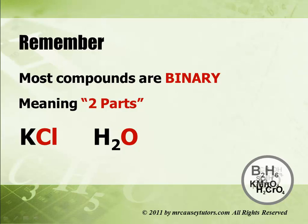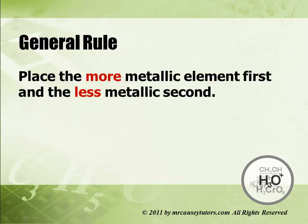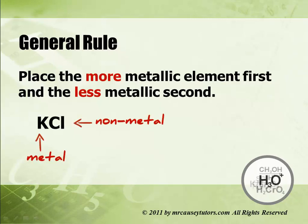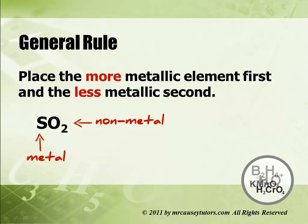KCl is potassium and chlorine; H2O is hydrogen and oxygen. Place the more metallic element first and the less metallic second. The more you are to the left of the periodic table, the more metallic you are; the more to the right, the less metallic. So potassium is the metal, chlorine is the non-metal. Sulfur is the more metallic and oxygen is the less metallic, even though neither one of those are truly metals.